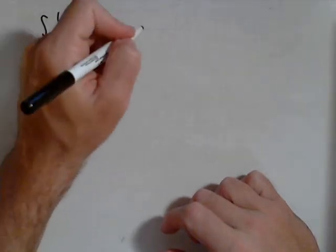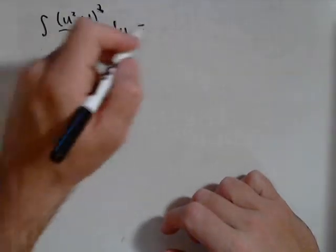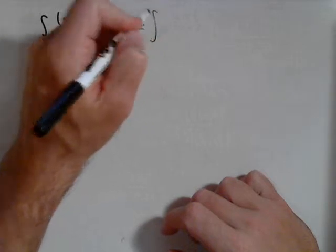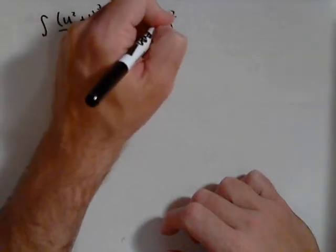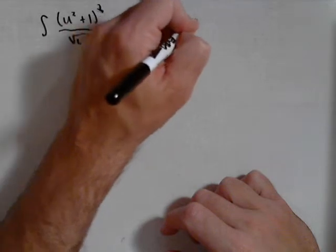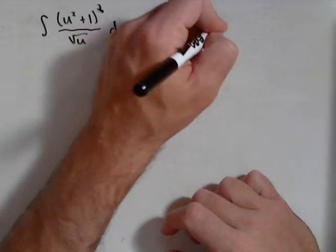Doing u squared plus one, the quantity squared, it's not too tough. We're just going to foil that out. So that would give us u to the fourth plus two u squared plus one.